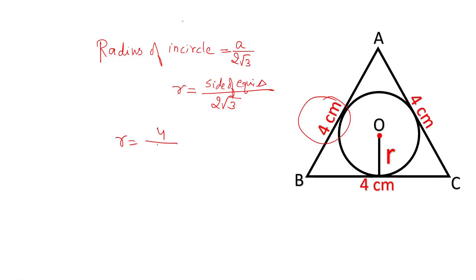So the radius will be 4 upon 2 under root 3. This will be cancelled out to 2 by root 3, and multiply and divide by root 3 to rationalize this, giving 2 under root 3 upon 3.